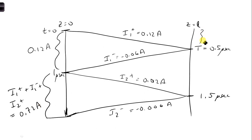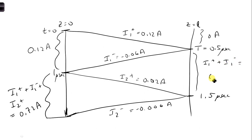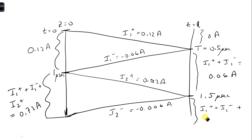At the load, we get 0 amps because nothing has reached the load yet in the initial span. In the next time span, we have I1 plus plus I1 minus, which equals 0.06 amps. And we can also label the final span as I1 plus plus I1 minus plus I2 plus plus I2 minus, which should equal 0.066 amps.